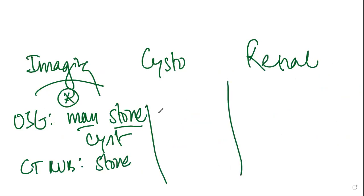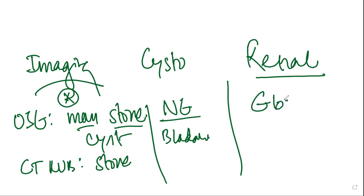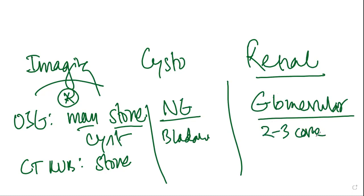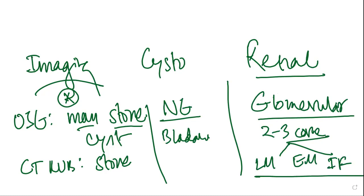Cystoscopy is indicated in non-glomerular hematuria to visualize masses in the bladder. Renal biopsy is indicated in glomerular hematuria. For the biopsy, two to three cores are taken and sent for light microscopy, electron microscopy, and immunofluorescence — these are the key tests to confirm the type of glomerulonephritis.